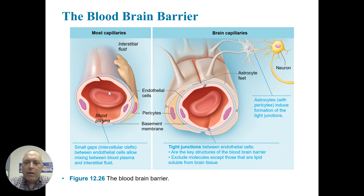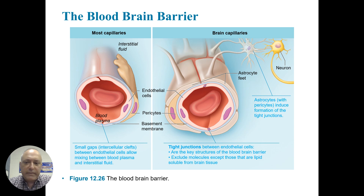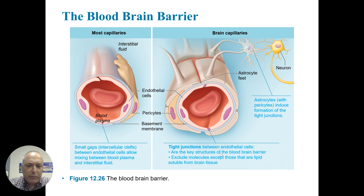There is also a blood-brain barrier. This is at the level of the vasculature, made up of pericytes and astrocytes. These two supporting cells, or glial cells, make a very tight seal that blocks systemic blood from reaching the brain. There are tight junctions between the endothelial cells, which are the key structures of the blood-brain barrier. Lipid-soluble species are able to cross, as well as typical gases like oxygen and carbon dioxide.